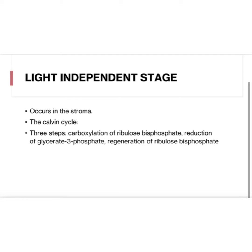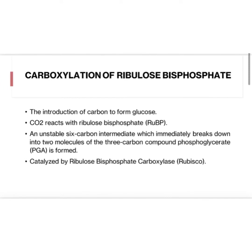Starting with carboxylation of ribulose bisphosphate — carboxylation means adding carbon dioxide to a molecule. An enzyme present in the stroma called ribulose 1,5-bisphosphate carboxylase oxygenase, or RuBisCO, catalyzes the reaction of carbon dioxide with ribulose 1,5-bisphosphate, the 5-carbon sugar. This compound then splits in half to form 3-phosphoglycerate (3-PGA) molecules.